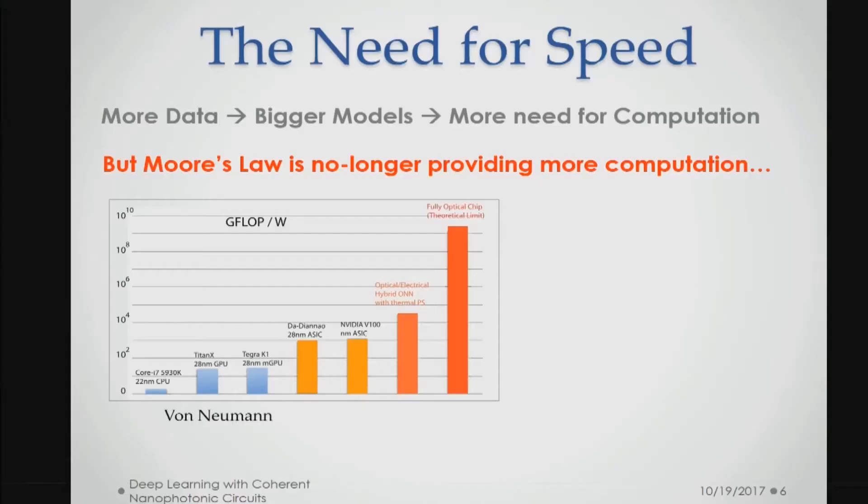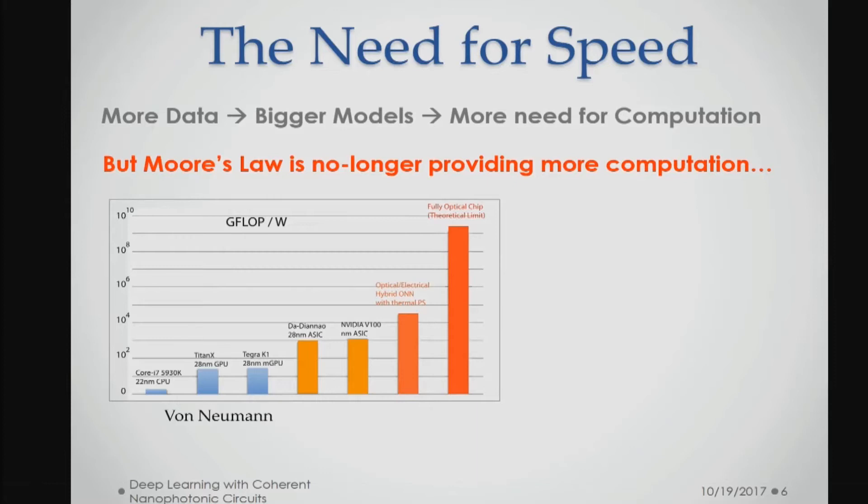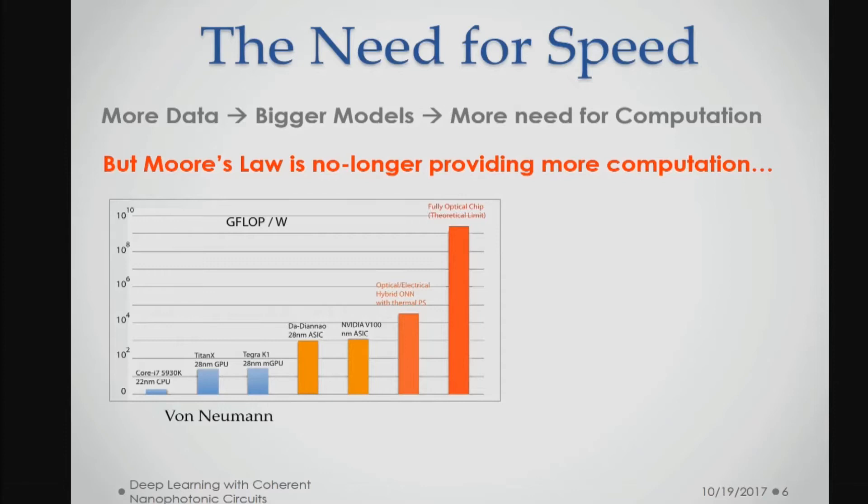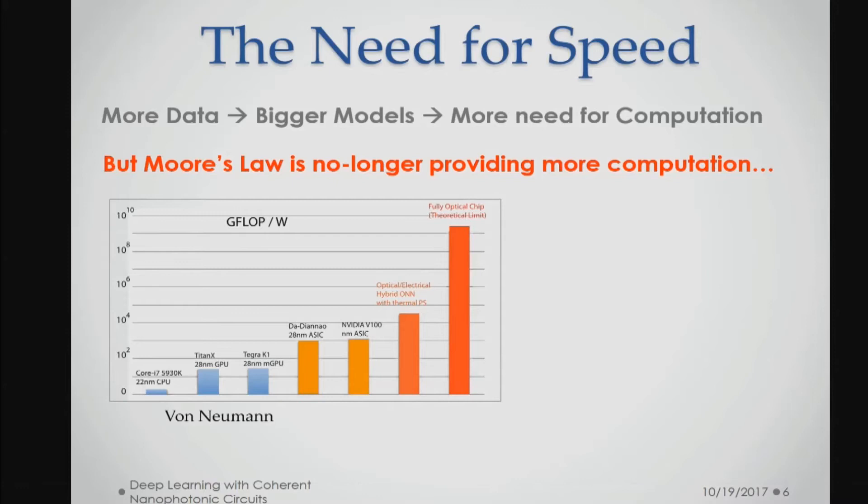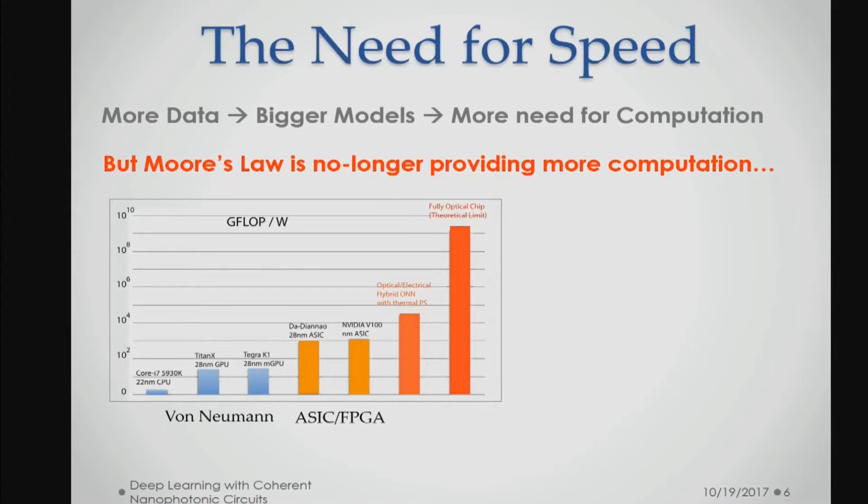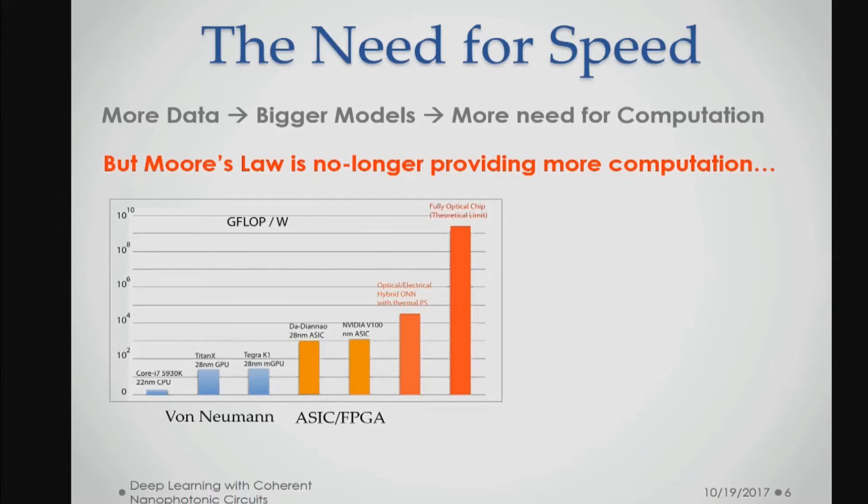In the next few years, the amount of data will still increase exponentially due to the Internet of Things. Everyone will have wearables, so we have exponentially more data. To process this, you probably need bigger models and larger neural networks, which means much more computation power. But if we keep the old architecture of CPU, we won't catch up with the vast increase of data size. Moore's law is no longer providing more computations.